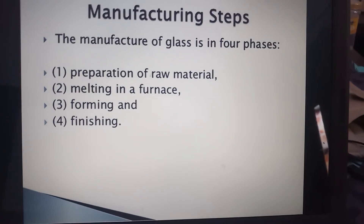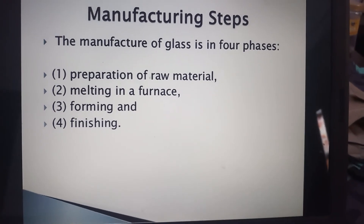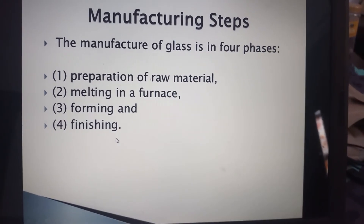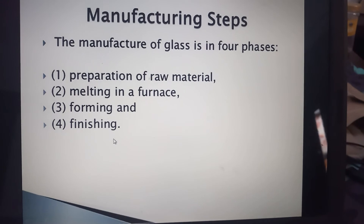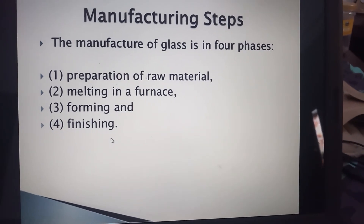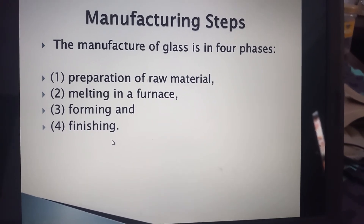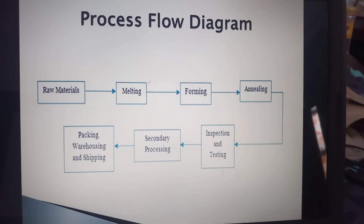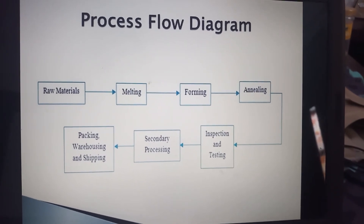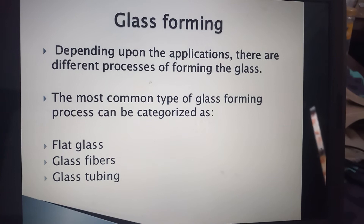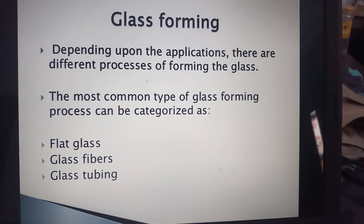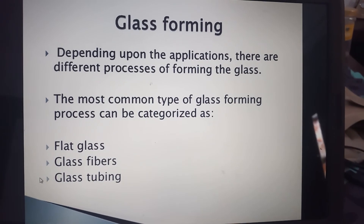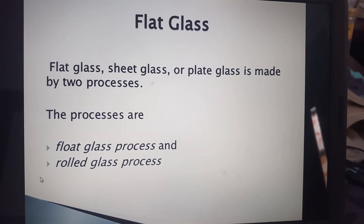The manufacturing of glass is done in four phases: preparation of the raw material, melting in a furnace, forming, and finishing. For complete reference, you can read the book 'Basics of Food Packaging' by P. Jacobs. The process flow diagram shows glass forming, which depends upon the application. The most common types of glass forming are flat glass, glass fibers, and glass tubing.